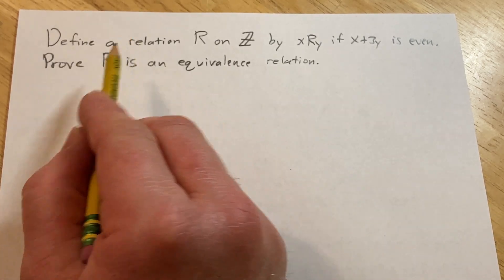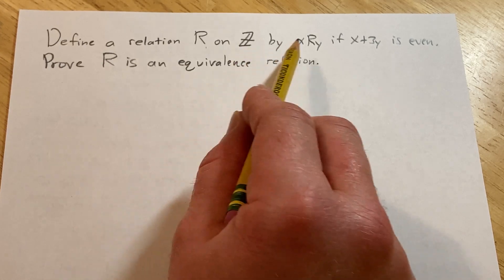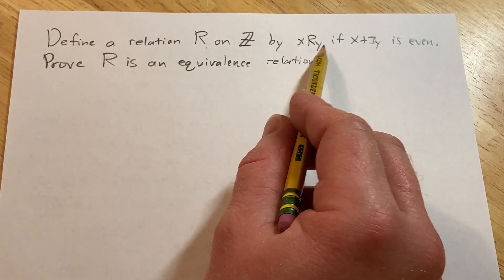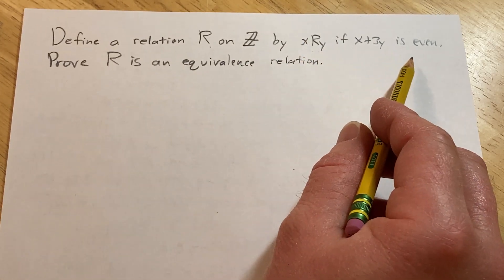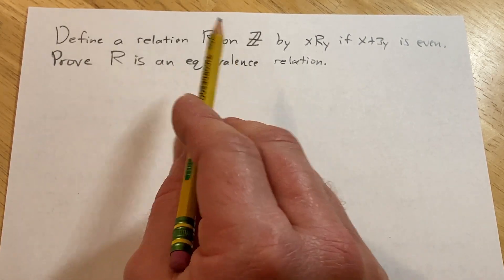Hi, in this video we're going to do a proof. Define a relation R on the set of integers by x is related to y if x plus 3y is even. We're going to prove that R is an equivalence relation.